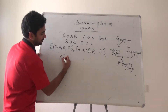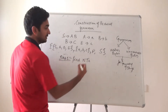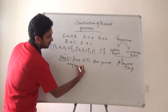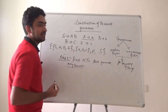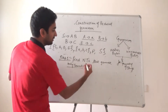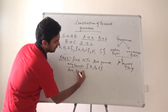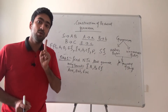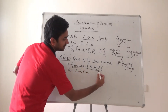The first step is: find non-terminals that generate only terminals. So, in this particular rule, this rule is generating a single terminal, this rule is also generating a single terminal, and E is also generating a single terminal. It means the non-terminals A, B, and E are very important because they are generating only terminals. A is generating small a, B is generating small b, and E is generating small c.